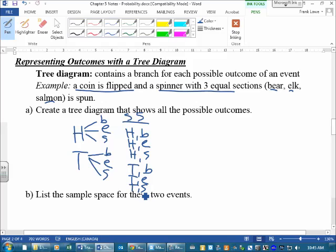So unlike the table, in a tree diagram, you actually have to write out the sample space. So those are all my combinations. And there are six possible combinations in that one.